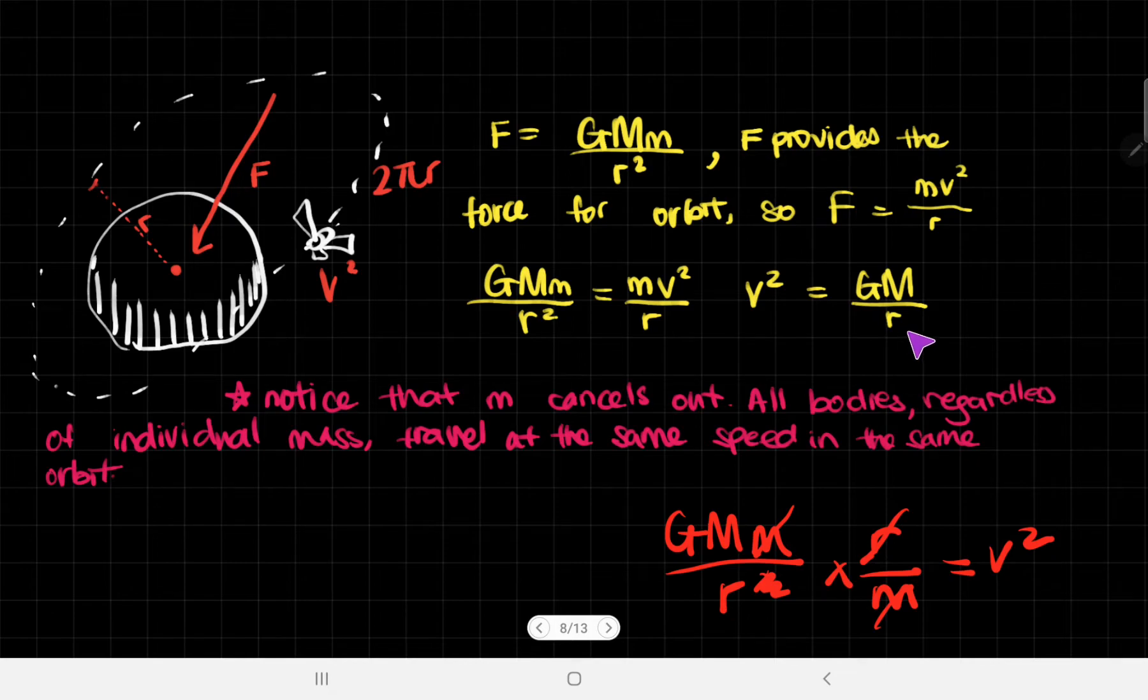What we can get from that is that m cancels out, and therefore all bodies, regardless of individual mass, travel at the same speed in the same orbit.